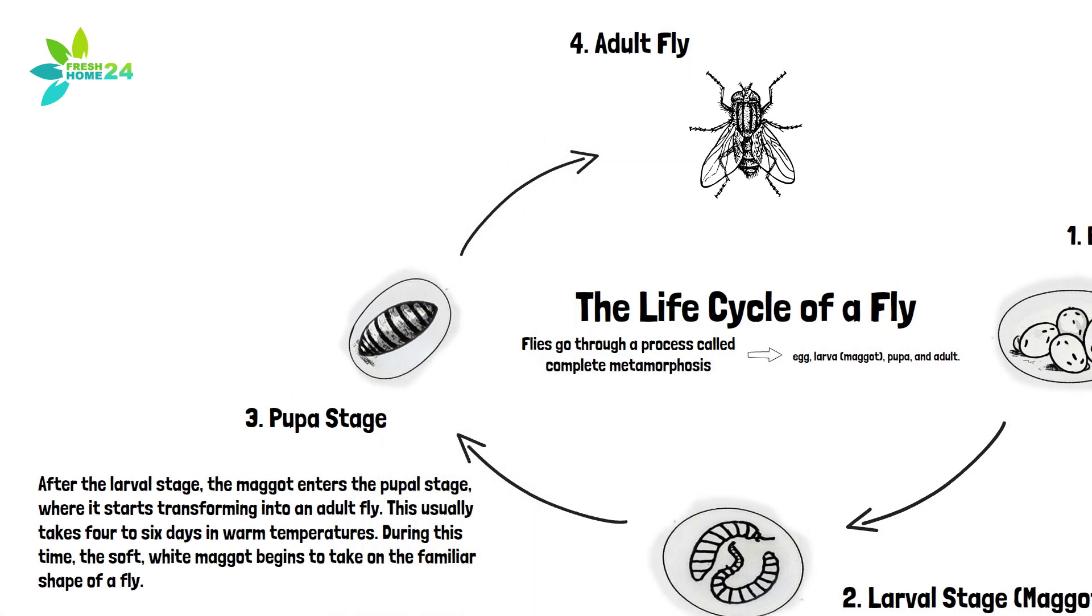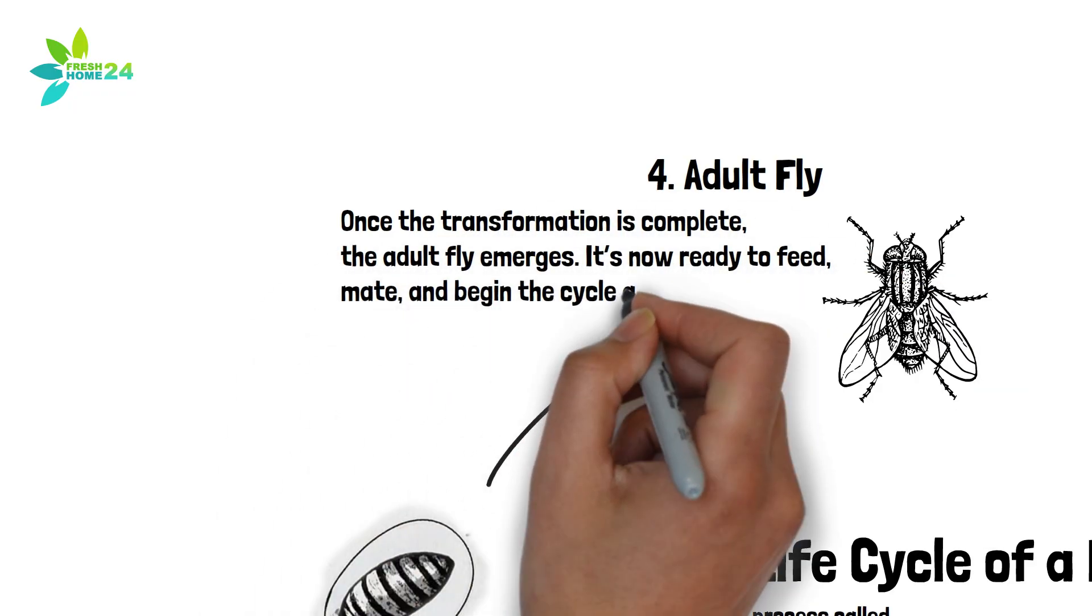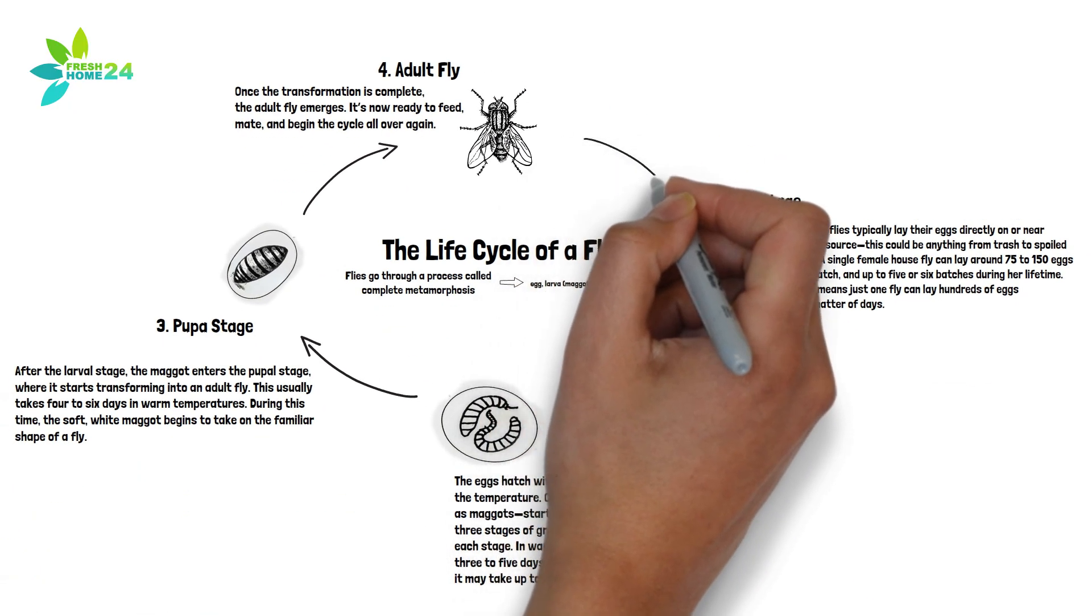4. Adult Fly. Once the transformation is complete, the adult fly emerges. It's now ready to feed, mate, and begin the cycle all over again.